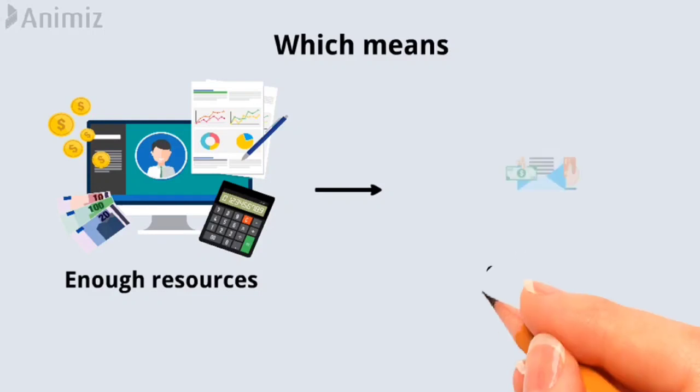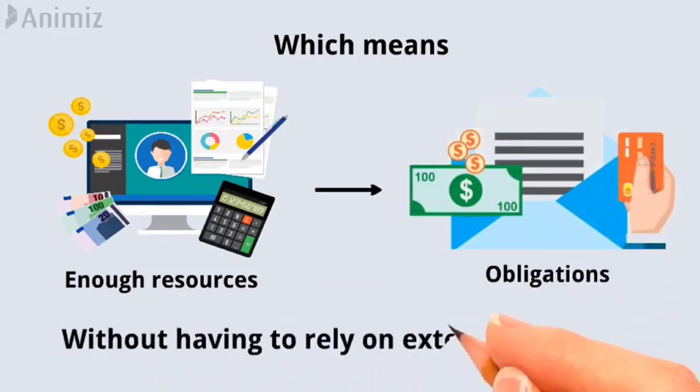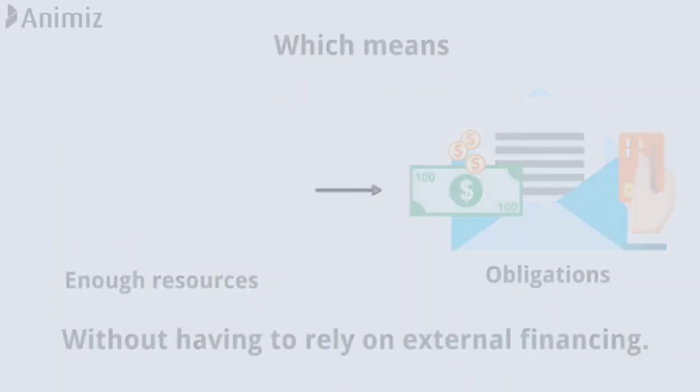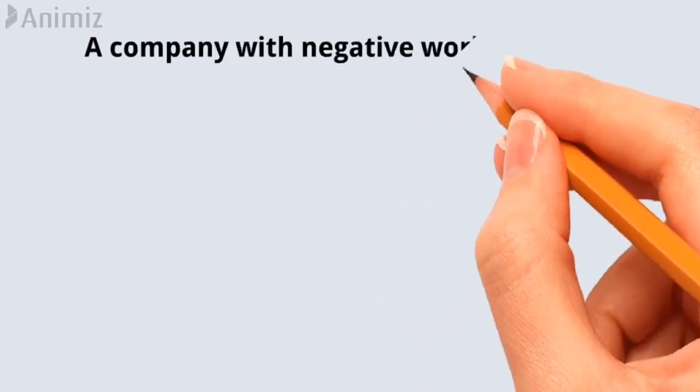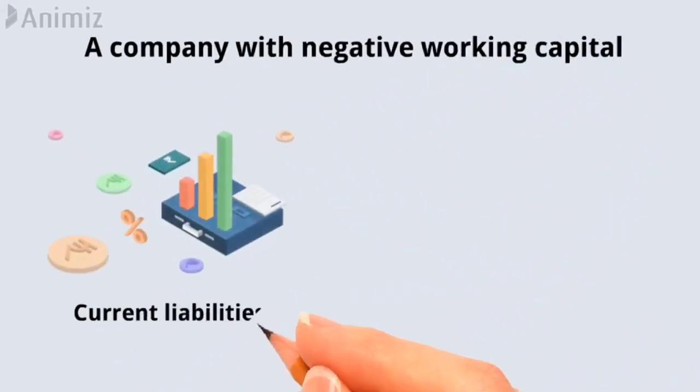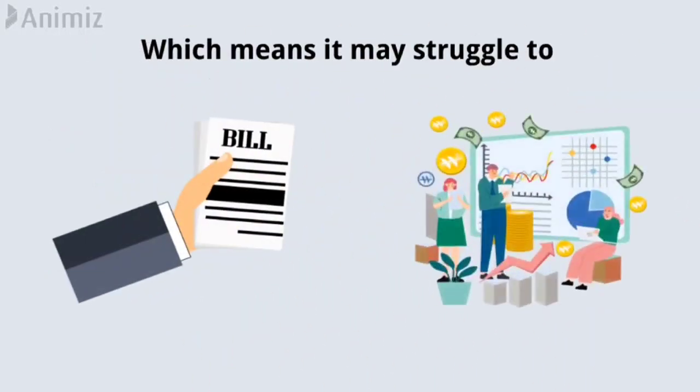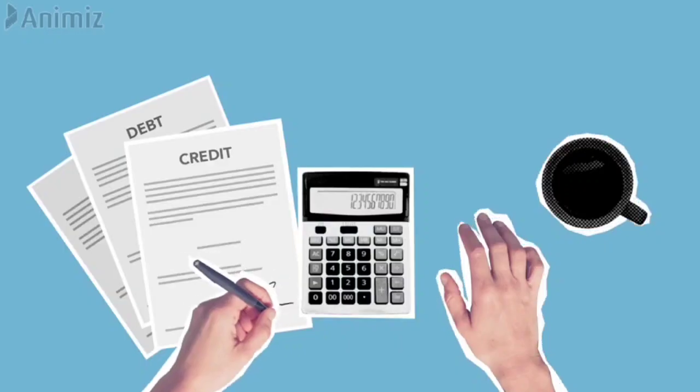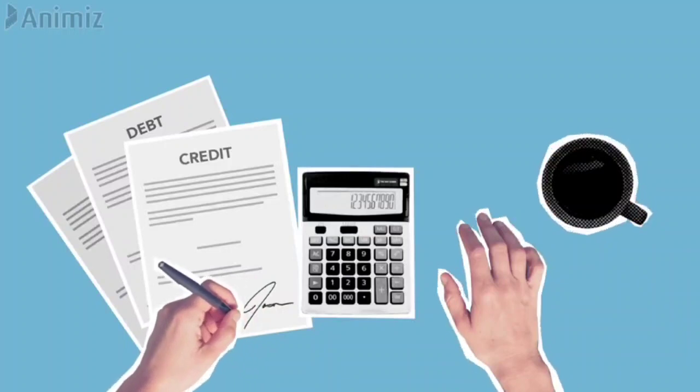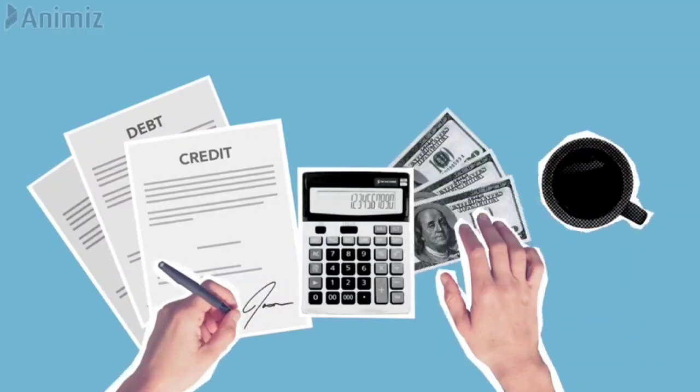Conversely, a company with negative working capital has more current liabilities than current assets, which means it may struggle to pay its bills and fund its operations. In this case, the company may need to borrow money or raise capital to cover its short-term obligations.